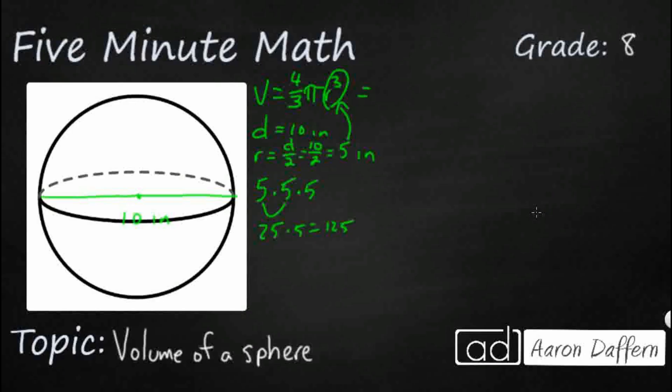So this is what we did and we'll kind of keep track. Four-thirds times pi times five cubed. So now we've got four-thirds times pi times 125. So I'm going to use the commutative property. I want to flip these two. I want to do this four-thirds times 125. So I want to do 125 over one times four-thirds. I think I want to do that, then multiply by pi.